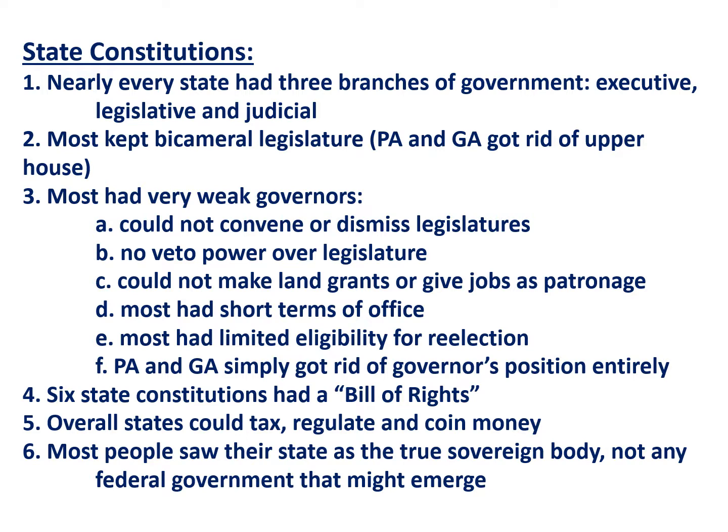Six state constitutions had a bill of rights. Virginia was the first to do so and other states borrowed from it. It closely resembled the Declaration of Independence in its rhetoric and explicitly protected the right to bear arms, freedom of speech and religion, and rules against ex post facto laws — laws passed that made something illegal after the action that was taking place. Overall, states could tax, regulate, and coin money, and clearly the state constitutions saw the states as the true sovereign body, not any federal government that might emerge later.